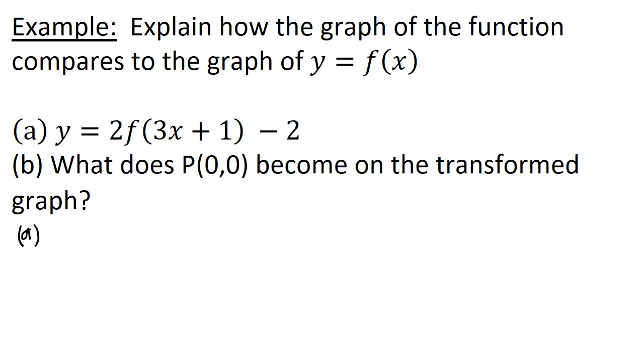So for x inside the argument of the function, it's going to be a horizontal shrink because it's multiplied by 3. So remember opposite land. So a horizontal shrink by 3 or you could say by 1 third. And then plus 1. How would we undo that? It would have to subtract 1. So it's to the left 1.